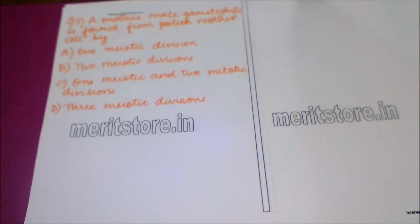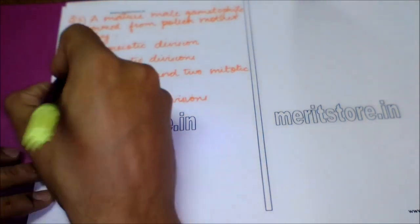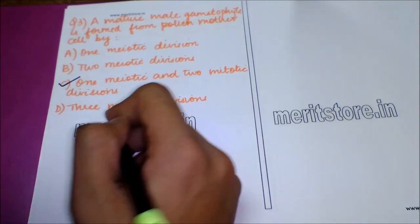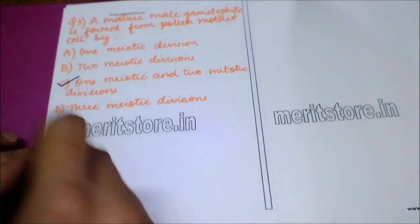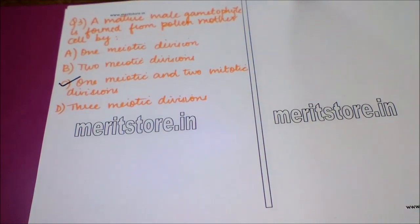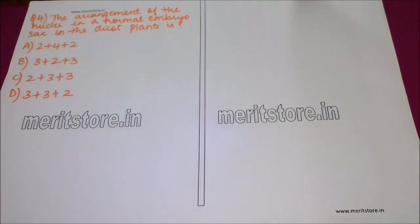The next question is: a mature male gametophyte is formed from a pollen mother cell by which divisions? Option A: one meiotic division. Option B: two meiotic divisions. Option C: one meiotic and two mitotic divisions. Option D: three meiotic divisions. The correct answer is option C — one meiotic and two mitotic divisions. During meiotic divisions the number of chromosomes becomes halved, while in mitotic divisions the number of chromosomes does not change.